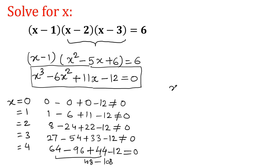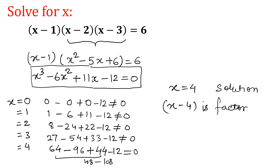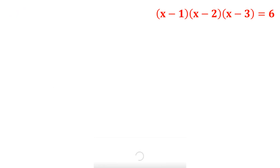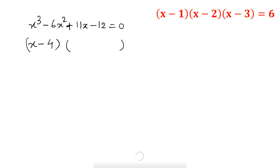That means x is equal to 4 is one solution of this equation, so x minus 4 is a factor. Now I will write this cubic equation as x cubed minus 6x squared plus 11x minus 12 equals 0, and write it in product form as (x minus 4) times a second bracket, which we have to find out.